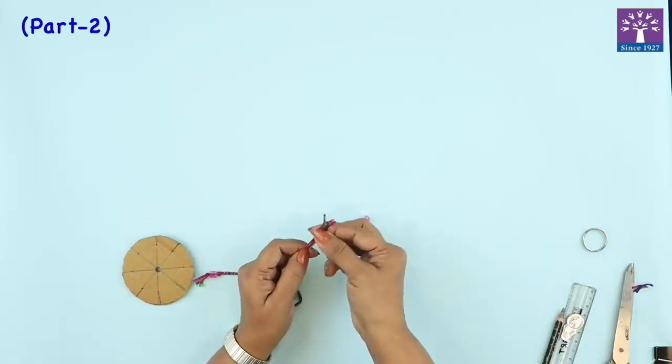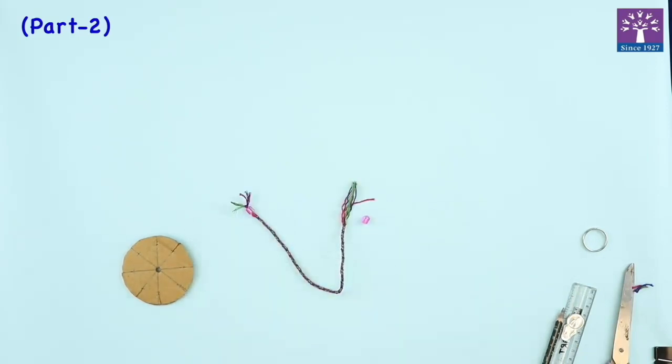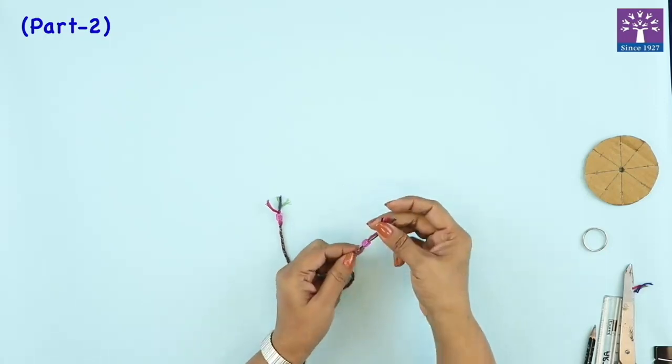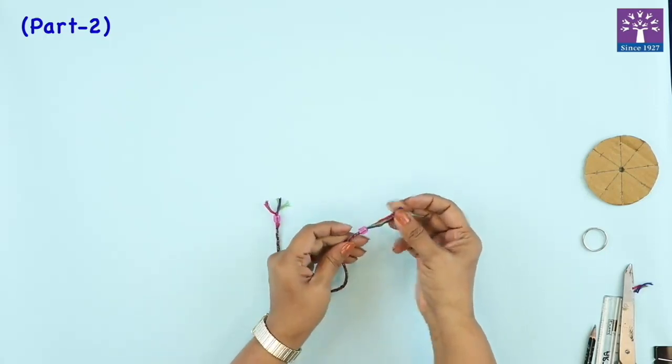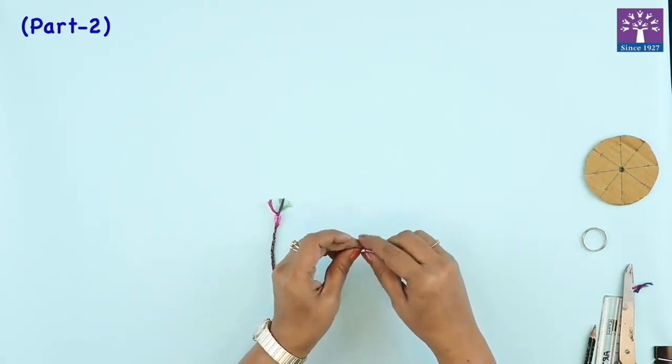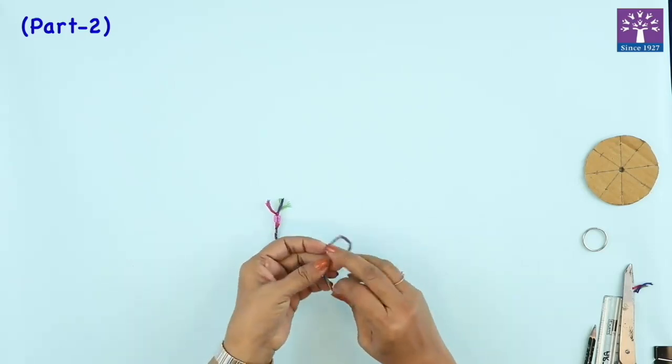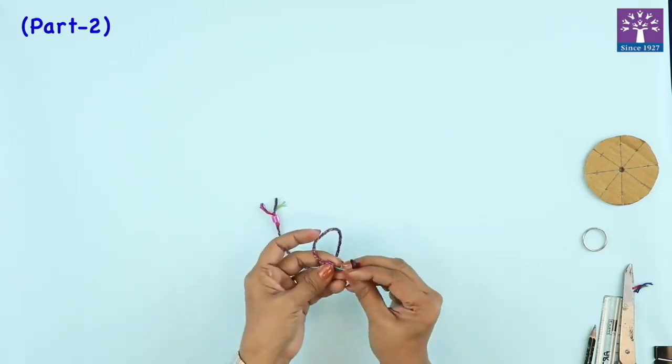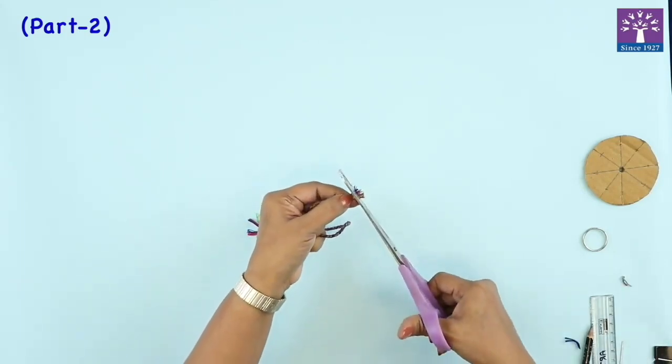I have one more bead. I will tie a bead at this end and put a knot. So I have slipped a small bead at the other end and I will tie a knot. And we will trim this other end evenly.